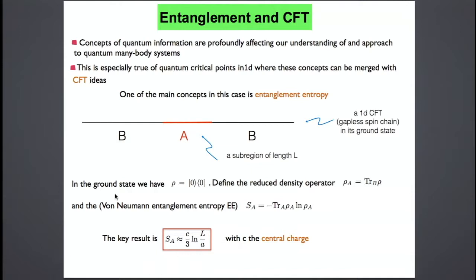The first slide is a standard slide which I'll go over very quickly. No point arguing that entanglement is useful, or at least it's fun calculating. I'll put myself mostly in the context of one-dimensional systems. The very well-known result: if you have a 1D CFT, a gapless spin chain in the ground state, and you look at the entanglement of a region of size L with the rest of the system, in the unitary case rho is just a projector onto the ground state. You define a reduced density operator by tracing over B, and the entanglement scales like C over 3 log(L/A), where A is a cutoff and C is the central charge.